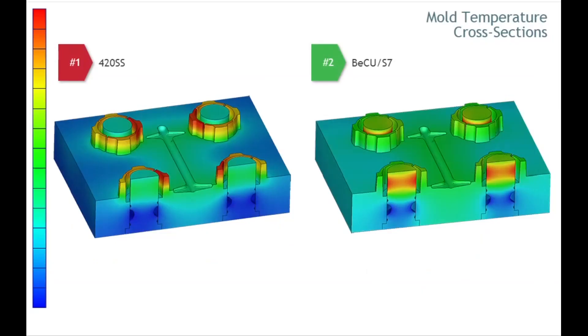Here you can see the mold temperature cross-sections for the examples at the end of the cooling time. The colors clearly indicate the difference in the mold temperature distribution. By changing the mold base material to beryllium-copper, the temperature variation was minimized.